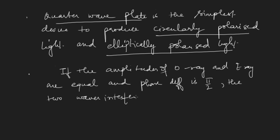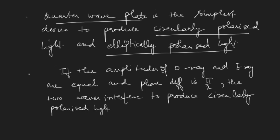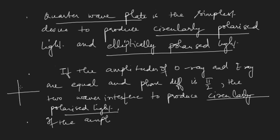This is a special kind of Lissajous figure which we call circularly polarized light: both amplitudes of the E-ray and O-ray are the same and the phase difference is pi by 2. When the amplitudes are different but again the phase difference is pi by 2 — which can be produced by the quarter wave plate — the two waves interfere to produce elliptically polarized light.